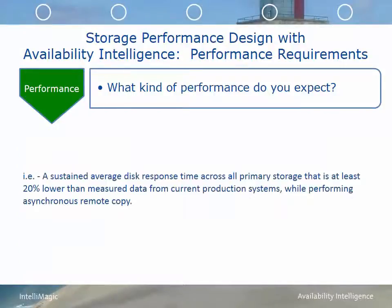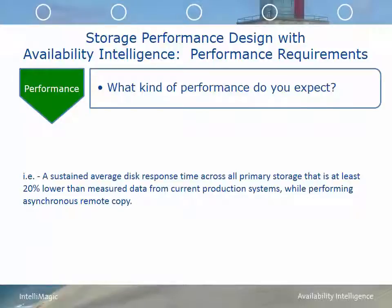Here is one example of a statement we might see in an RFP: 'A sustained average disk response time across all primary storage that is at least 20% lower than the measured data from current production systems while performing asynchronous remote copy.' This statement addresses the need to identify expectations around disk storage response time on the primary, assumes an asynchronous replication environment, and sets a concrete expectation that the new controller will perform at least 20% better than the existing generation. These are the types of statements you need to communicate to vendors in your RFP.